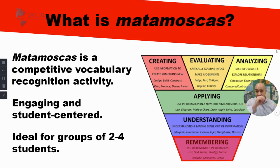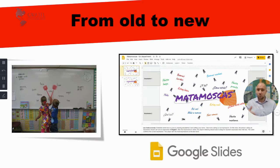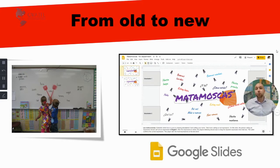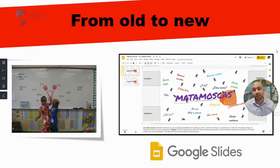Everybody is going to be engaged in this activity. This is an ideal activity for groups of two to three to four students. Now you might recognize this from way back in the day with overhead projectors. We used to project expressions on the board, give two students literal fly swatters, call out an expression, and the first person to smack the expression on the board wins. Well, that was then and this is now - we can play a virtual Matamoskas using Google Slides.